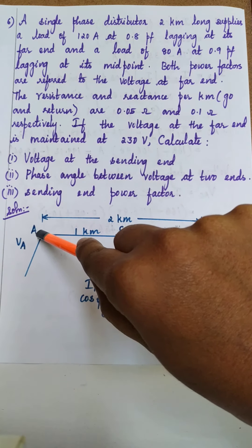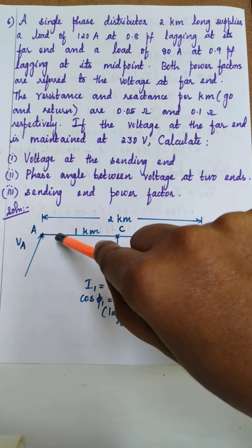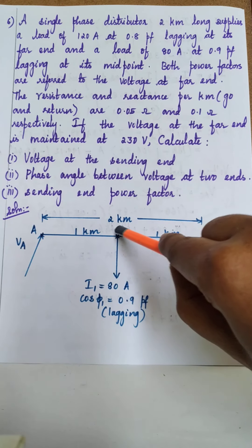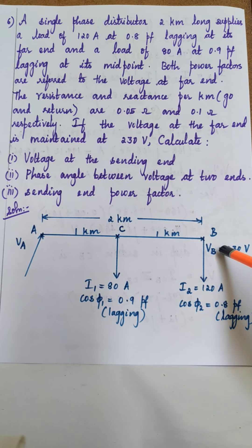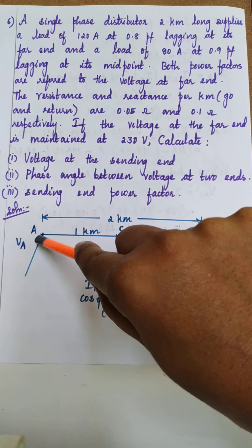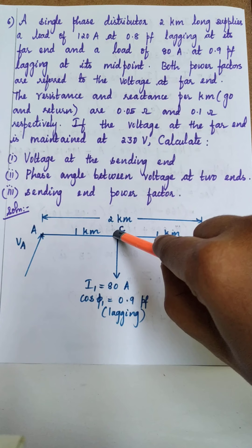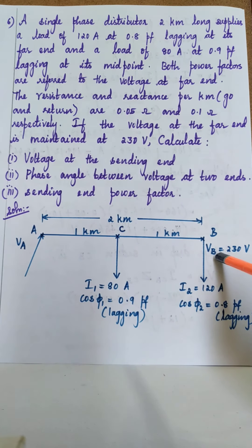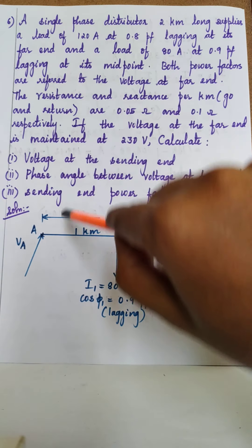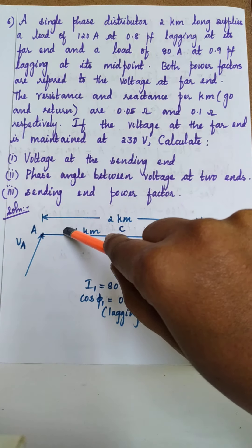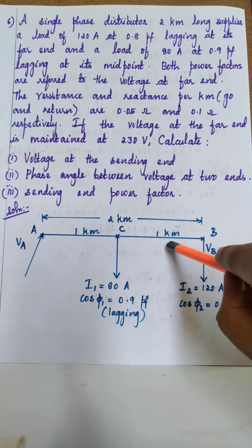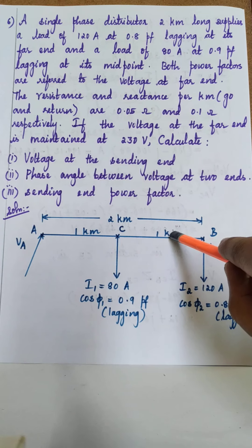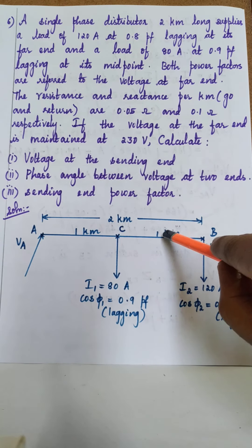To find the voltage at the sending end, we need the voltage drop across AC plus the voltage drop across CB plus the voltage at the receiving far end. So the sending end voltage VA equals VAC plus VCB plus VB. VAC equals IAC × ZAC, and VCB equals ICB which is I2 × ZCB.